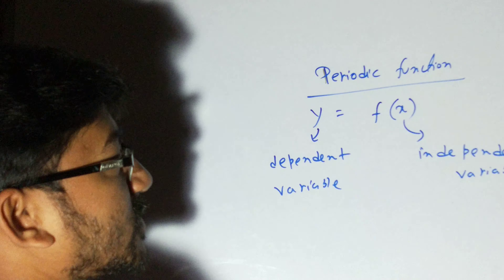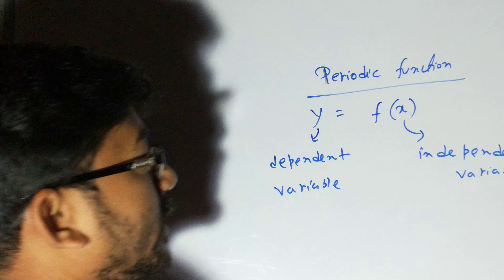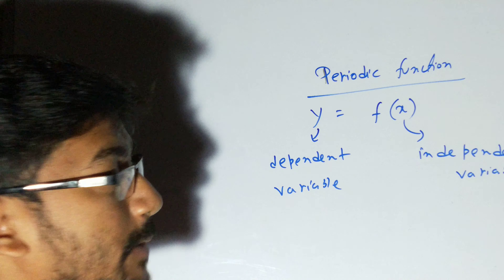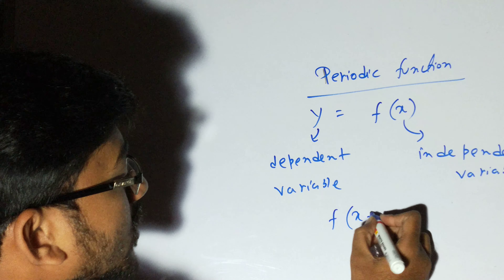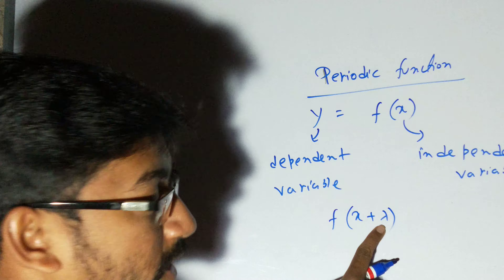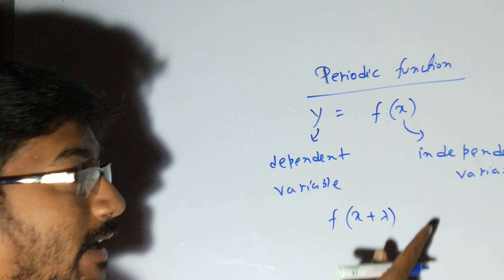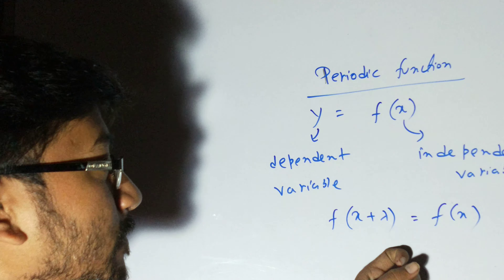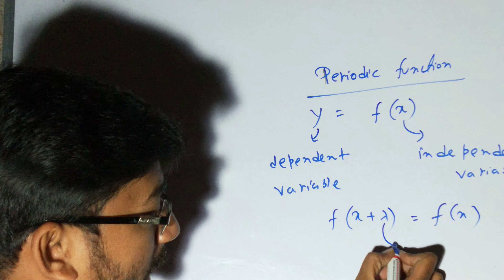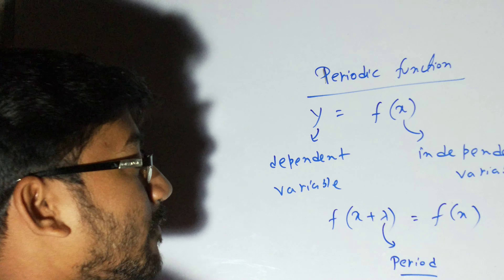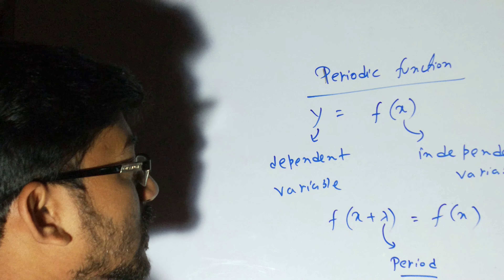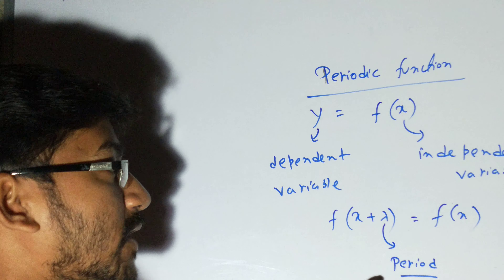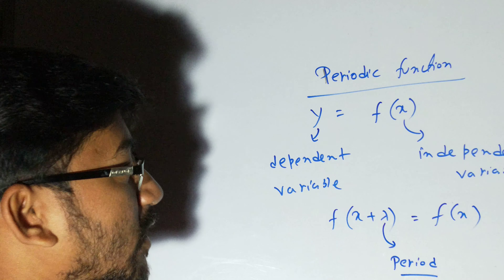A function is called a periodic function when, if we add some constant lambda to the variable x and still get the same function f(x), that is, f(x + λ) = f(x). That constant lambda is called the period of the function. So a periodic function is one that repeats itself when a constant is added to its variable.